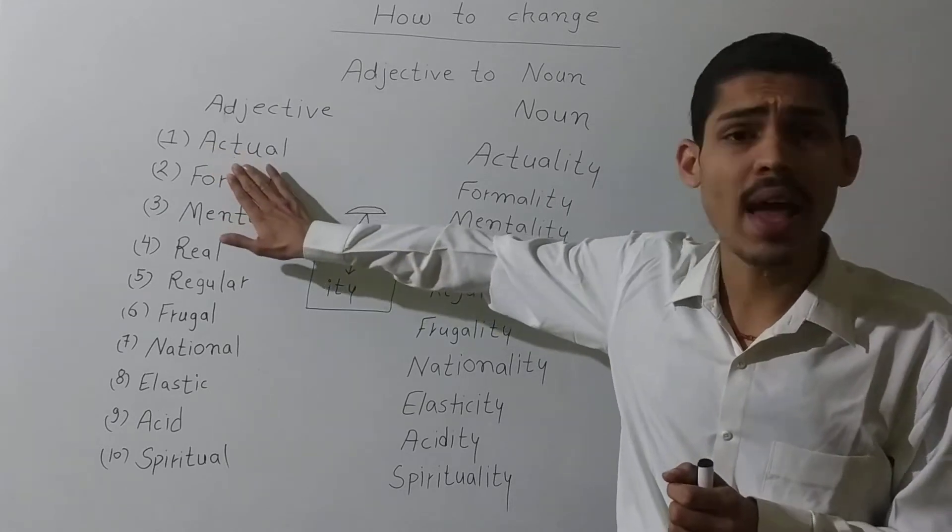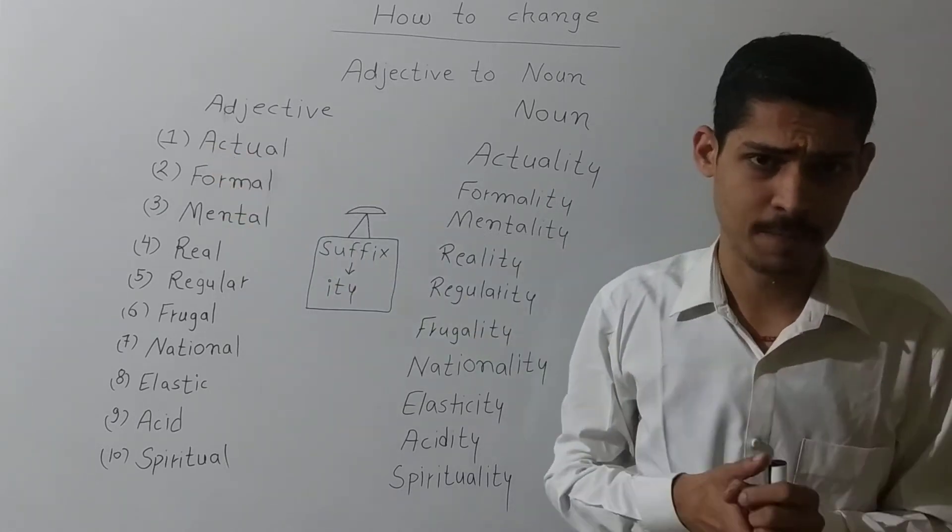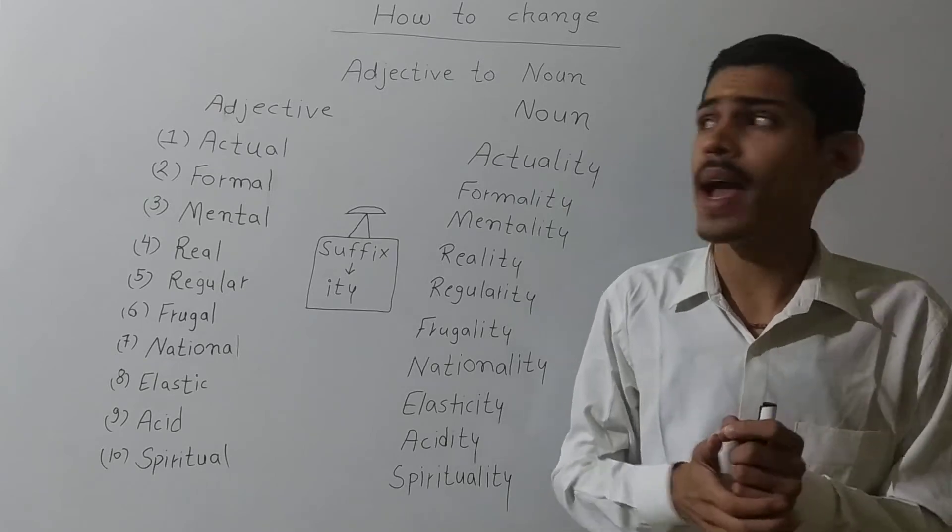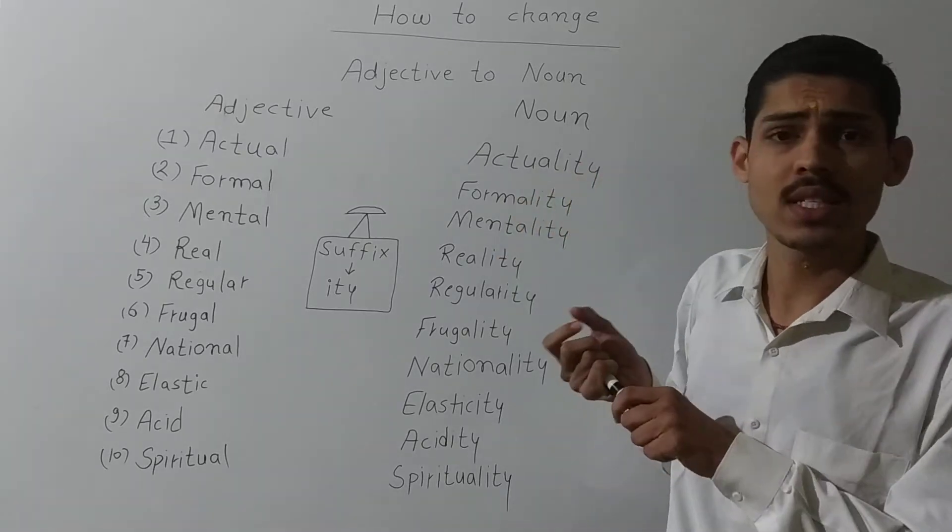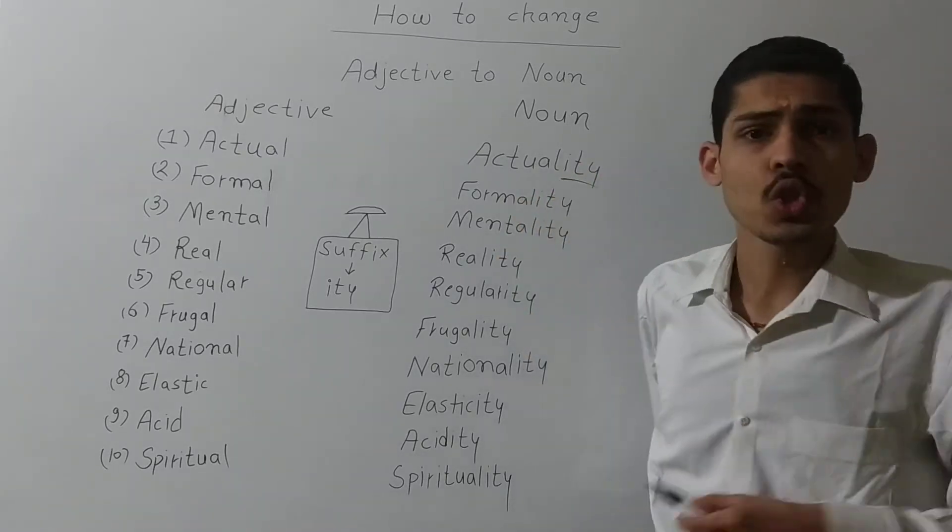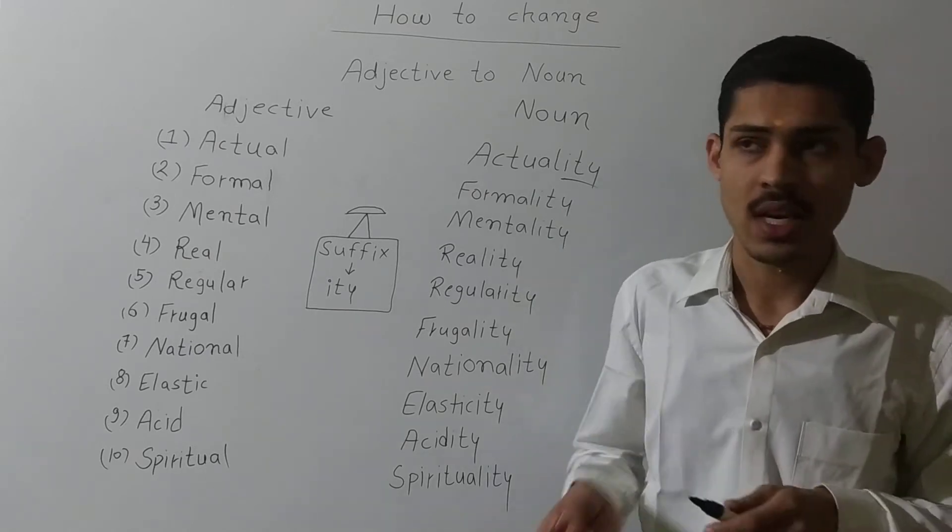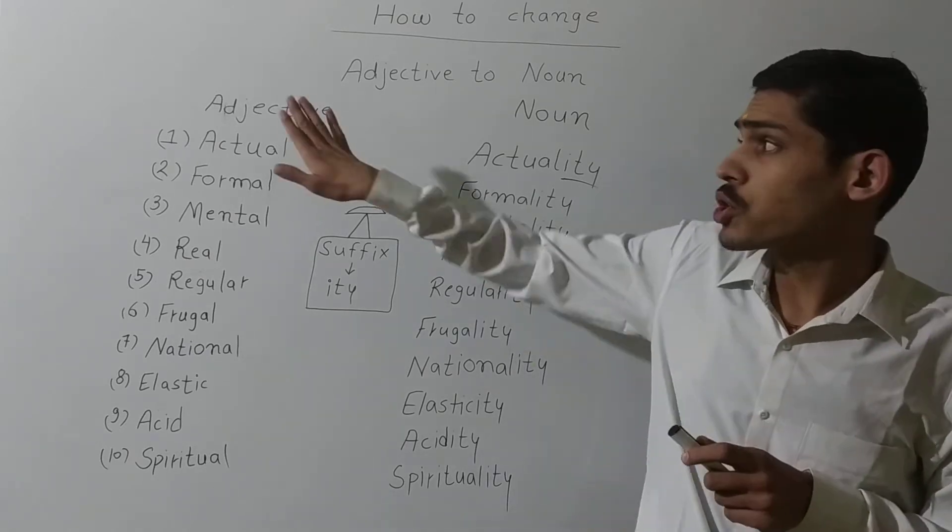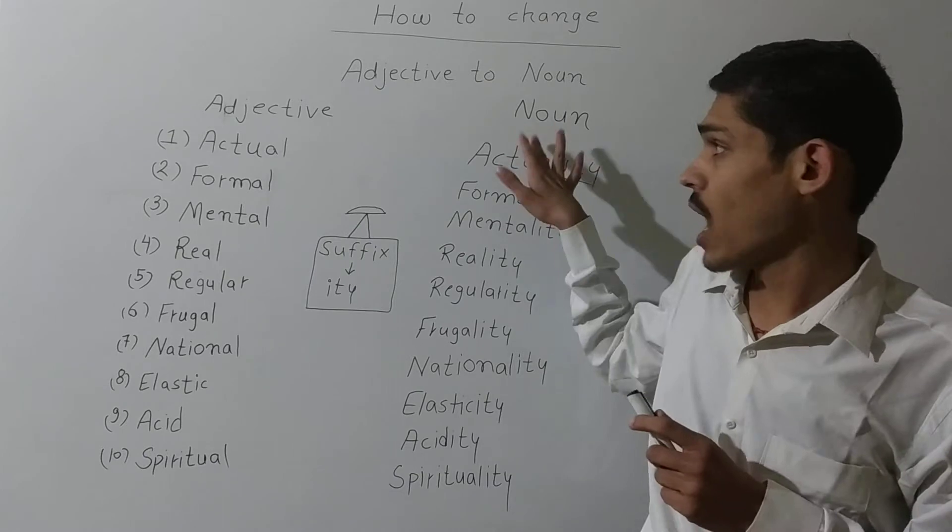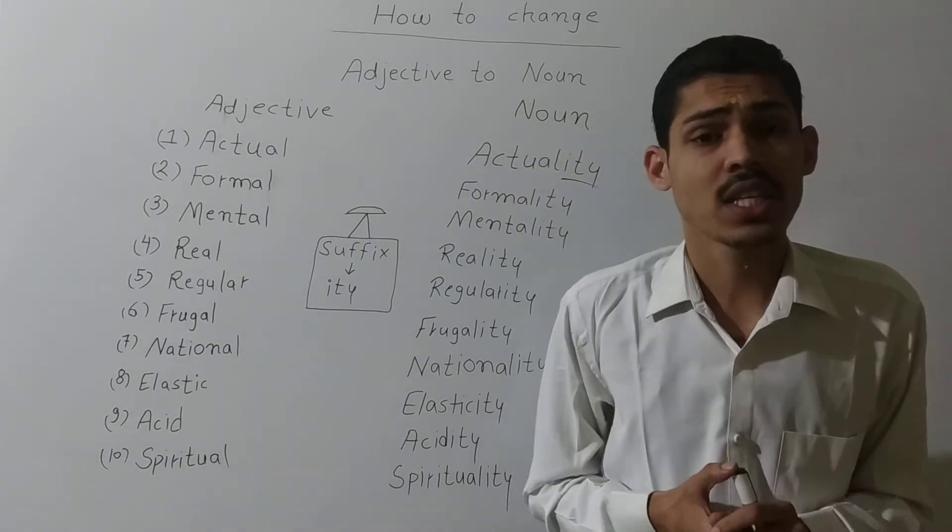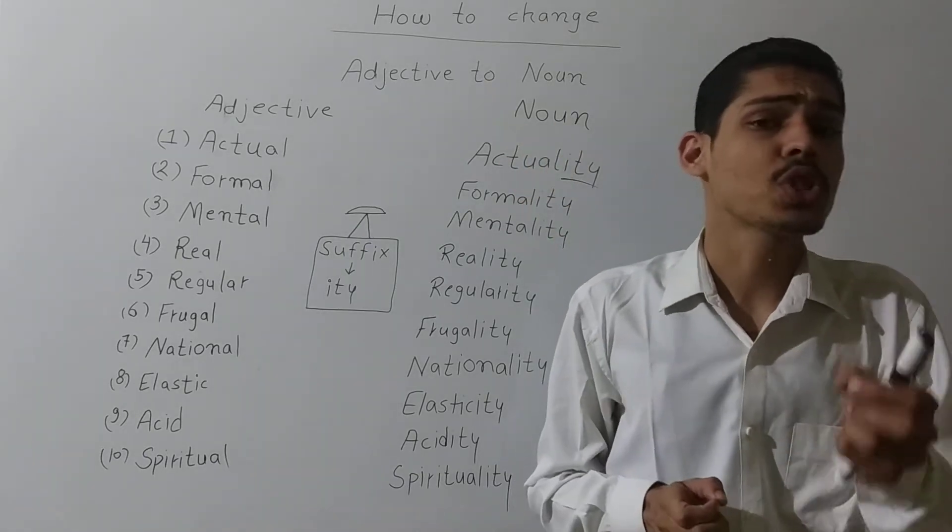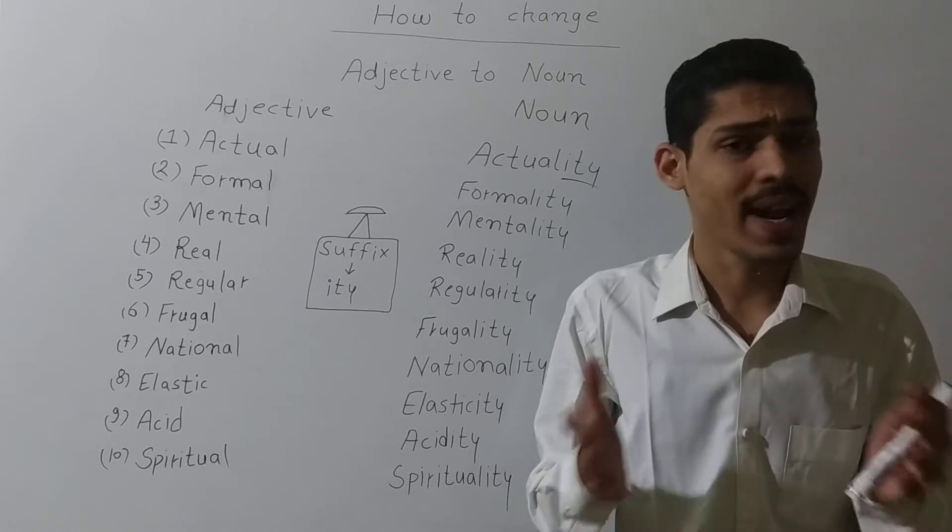Like for example, actual. Actual is a word and we are going to add I-T-Y at the end of the sentence. So this is called suffix and I have also talked about the adjective and noun. What is adjective? Adjective means a word that shows the quality of noun.